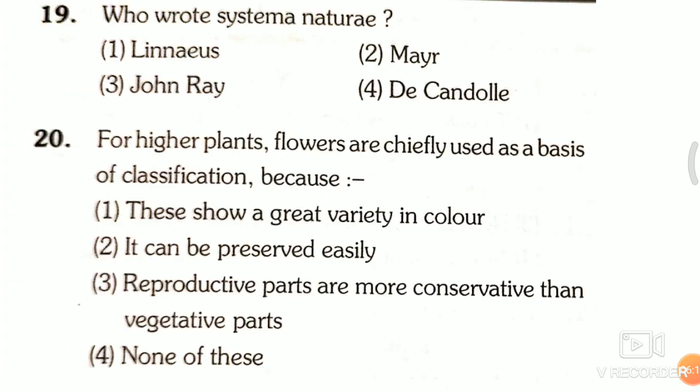Question 19: Who wrote Systema Naturae? First, Linnaeus; second, Mayr; third, John Ray; fourth, De Candolle. The answer is the first one, that is Linnaeus.